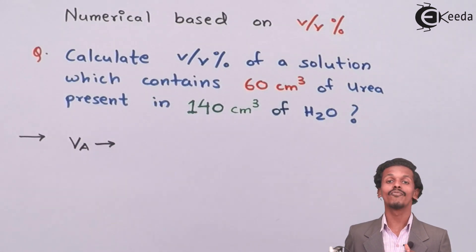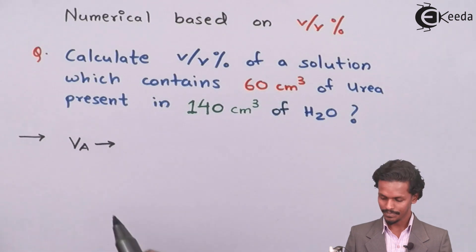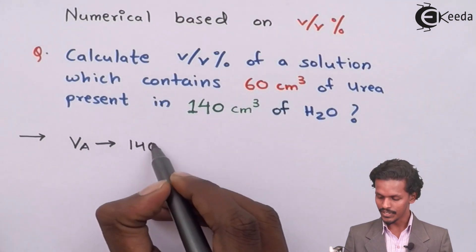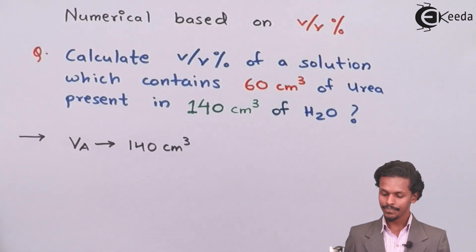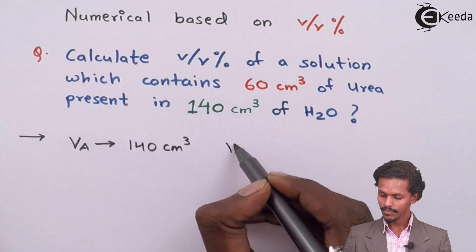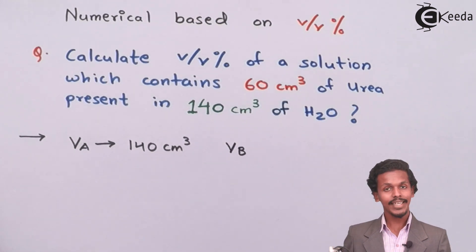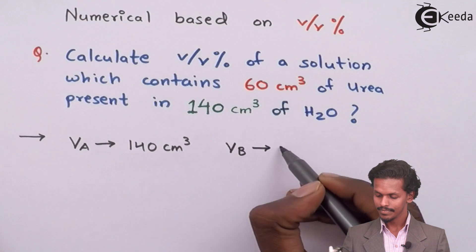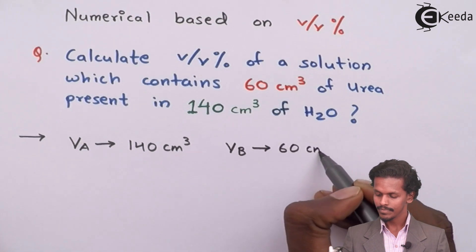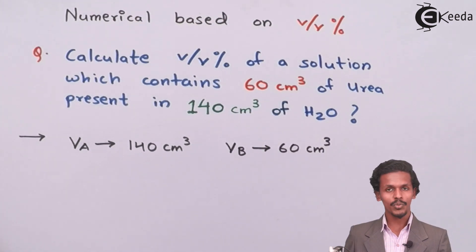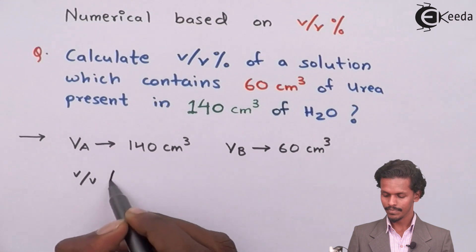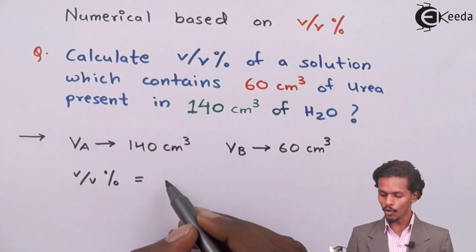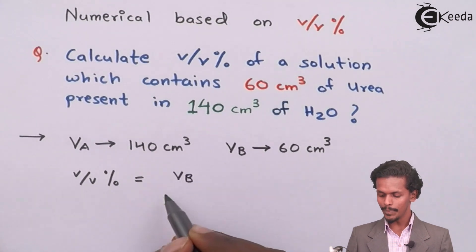Here VA means volume of solvent, which is 140 cm³, and VB means volume of solute, which is 60 cm³. We have to calculate the percentage by volume. We have the formula: VB divided by VA plus VB, times 100.